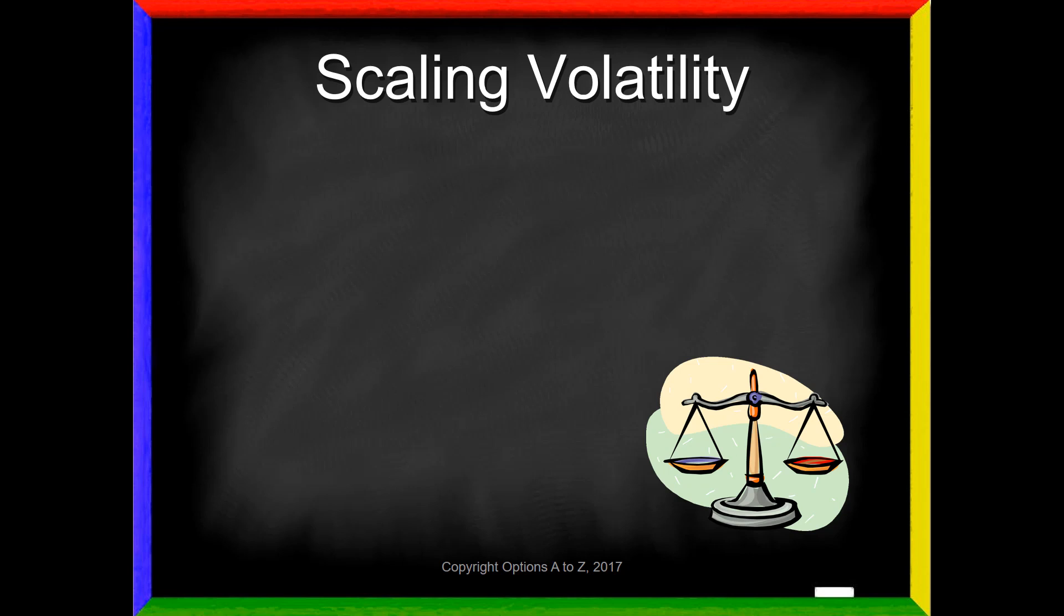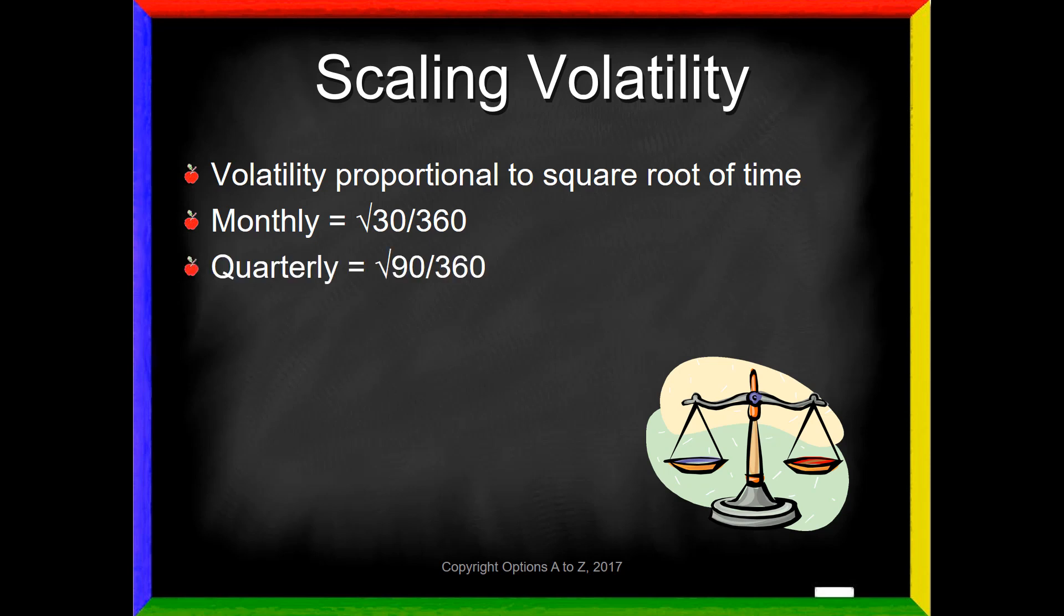And unfortunately, we can't scale volatility like we can with interest rates. If I want to know what a six-month rate is, I divide it by two. A three-month interest rate, I can divide it by four. I cannot do that with volatility. And the reason is that volatility is proportional to the square root of time. So if we want to find monthly volatility, which is what we're doing here over 30 days, I need to scale it and I need to say my volatility is actually the square root of 30 over 360. If I wanted to know what volatility would be over a quarter, I would take the square root of 90 over 360. So it's always about the square root of time.